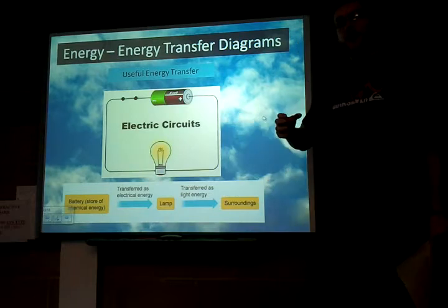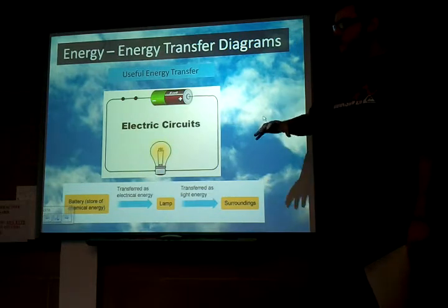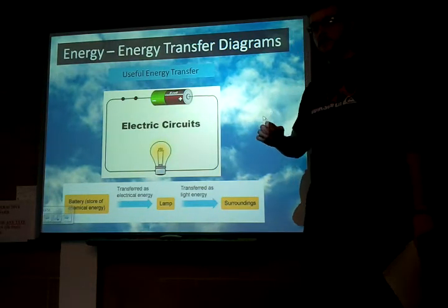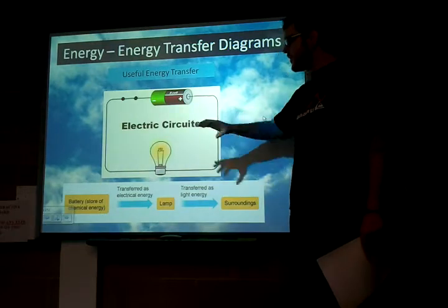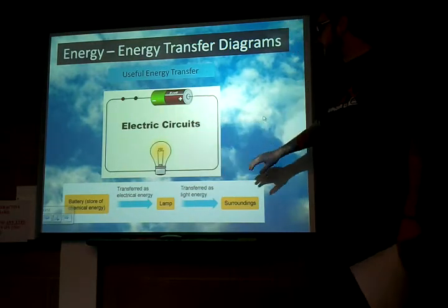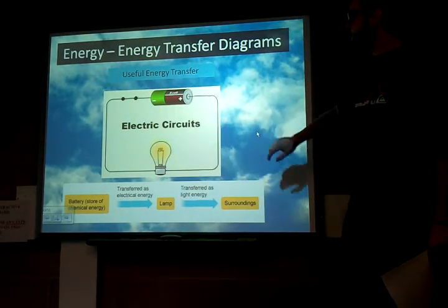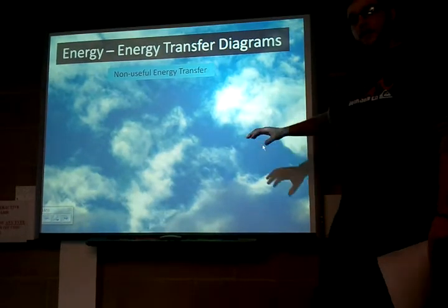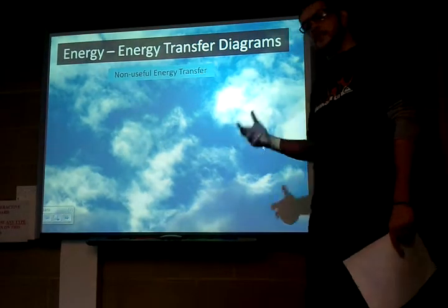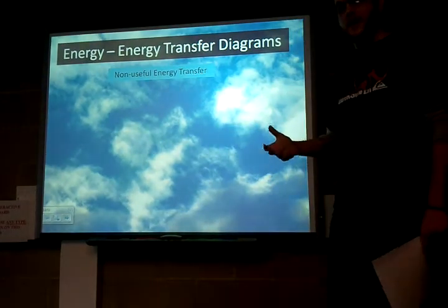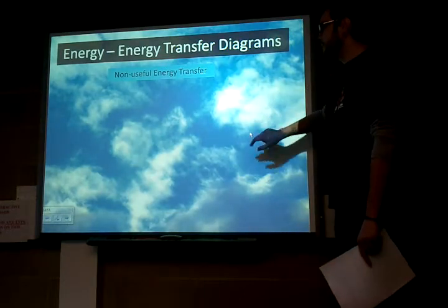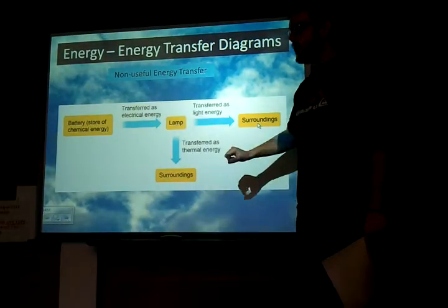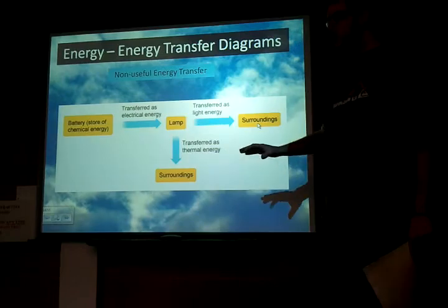As you will find out, no process is 100% efficient. Not everything that we put in will make that light. So obviously we have useful transfer, and the opposite of that would be non-useful transfer. This next diagram is going to show us where our non-useful transfer comes in.